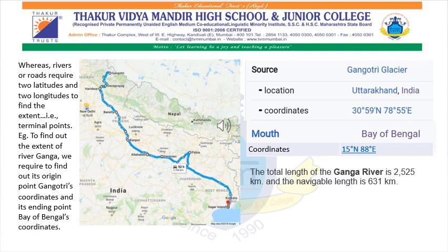Going a little further, if you want to find out the extent of any road, river, or region, you require at least two latitudes and two longitudes. For example, to find the extent of River Ganga, we need its origin point — Gangotri Glacier's coordinates — and its ending point — Bay of Bengal's coordinates. Gangotri Glacier is at 30 degrees 59 minutes north, 78 degrees 55 minutes east, while the Bay of Bengal is at 15 degrees north, 88 degrees east. The total length of River Ganga is 2,525 kilometres, while the navigable length is 631 kilometres.